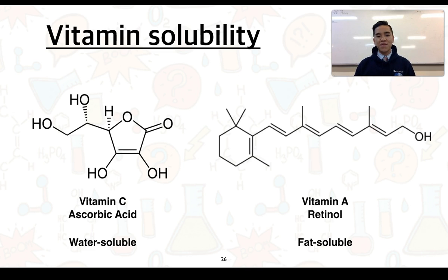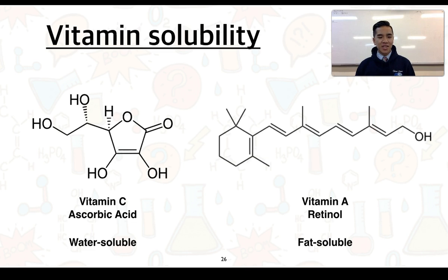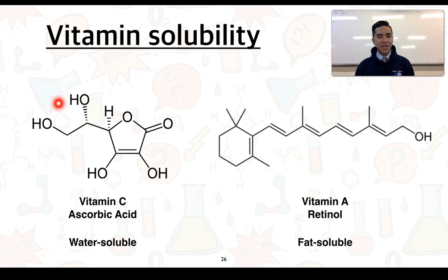We can also look at the solubility of vitamins — vitamins can be classified as either water-soluble or fat- or lipid-soluble. Vitamins B and C are classified as water-soluble, whereas vitamins A, D, E, and K are fat- or lipid-soluble. Water is a polar solvent, so in order for something to dissolve in it, it generally needs to be polar. Vitamin C, also called ascorbic acid, contains many polar OH (hydroxyl) groups.